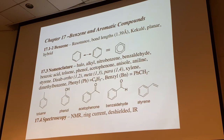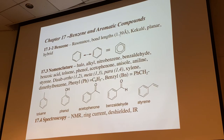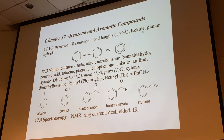Benzene is fully delocalized around the ring - the donut structure. X-ray structures confirm all bond lengths are the same, between a single bond (1.51 Å) and a true double bond (1.31 Å). It's flat, looks like a hexagon. We'll discuss Hückel's rule, the characteristics of aromaticity, models, and nomenclature. I expect you to know some common parent names.